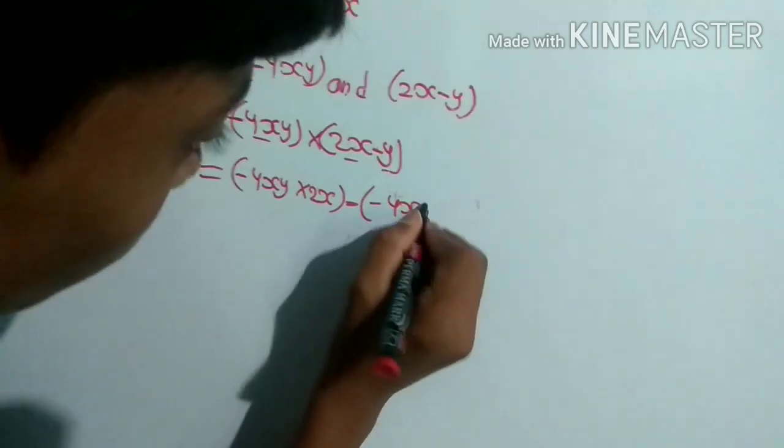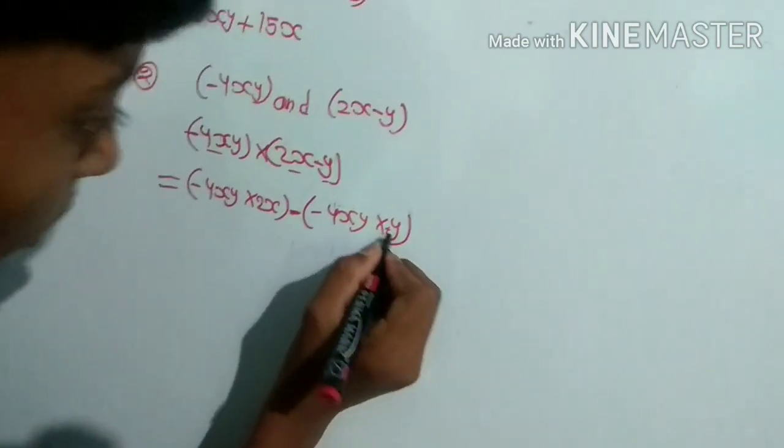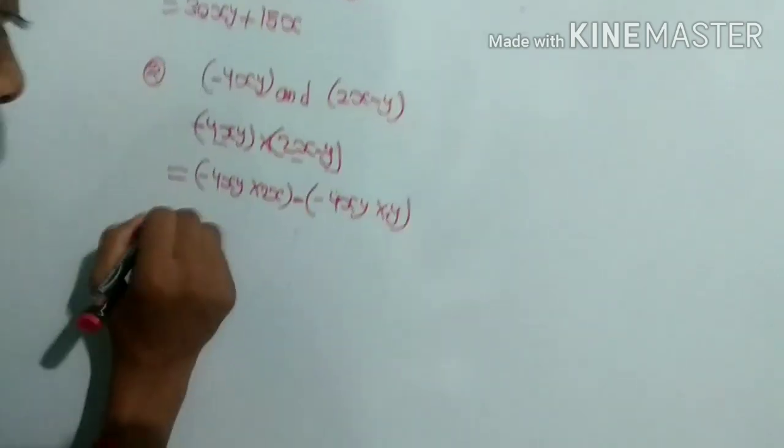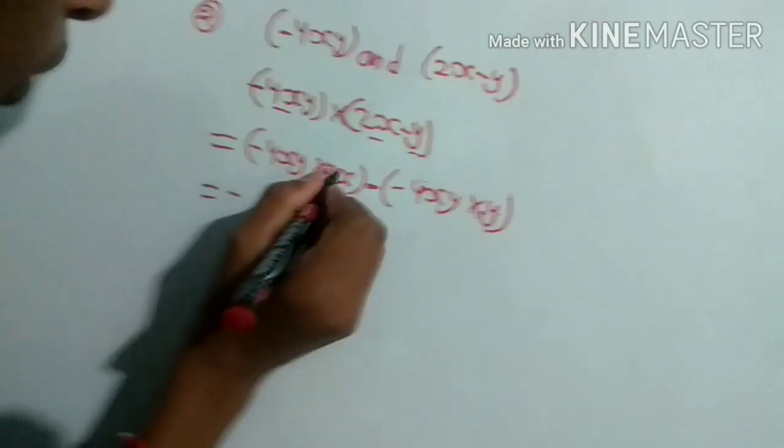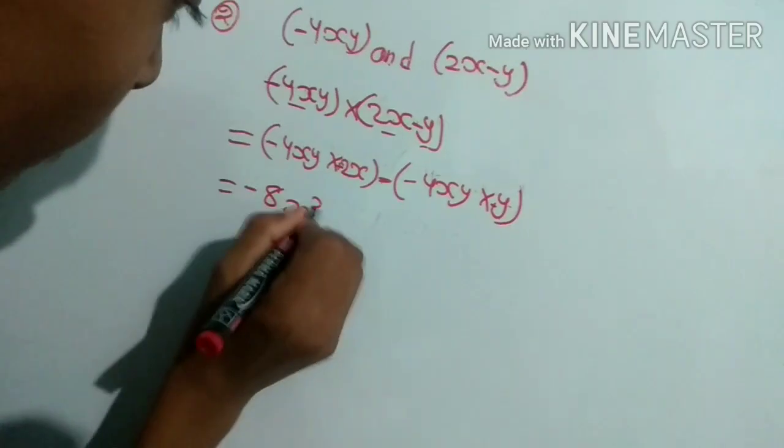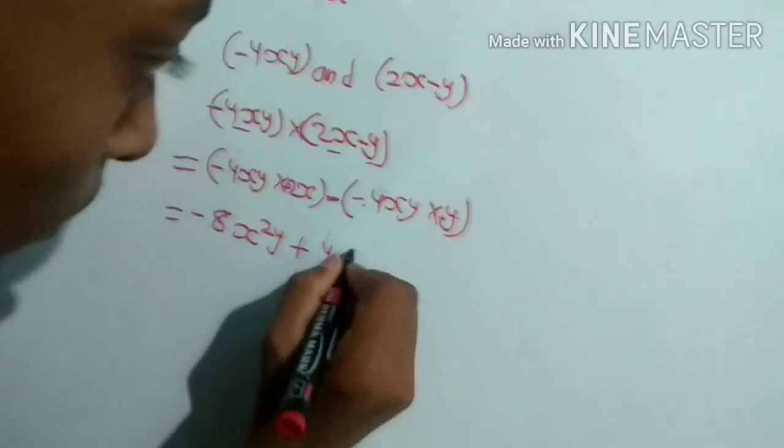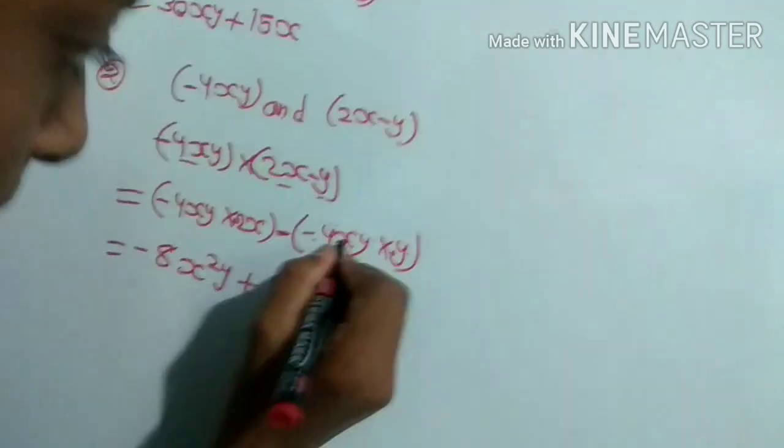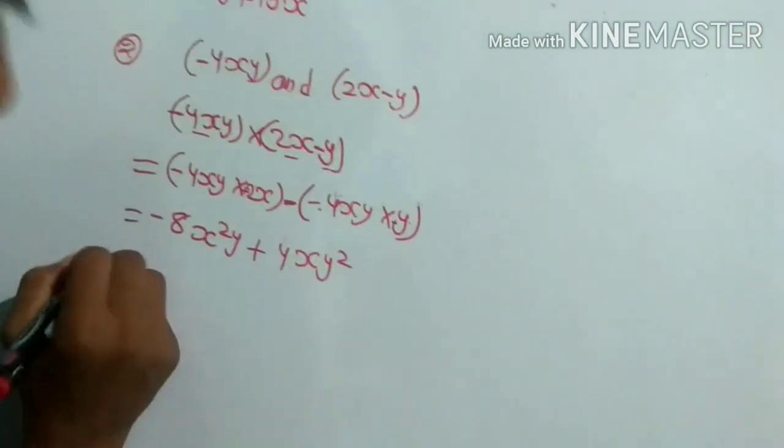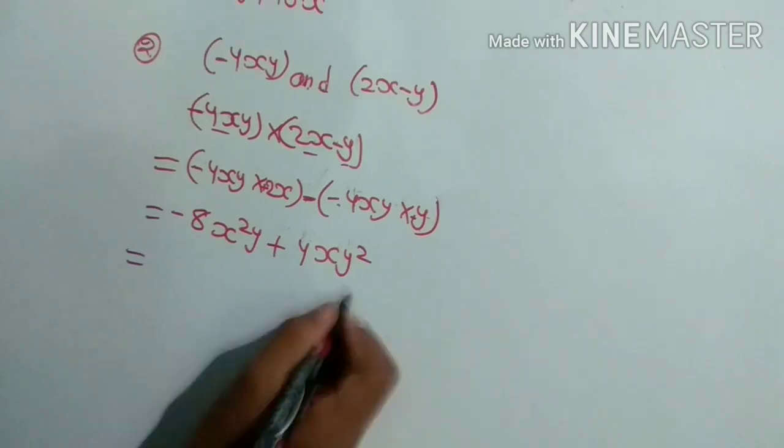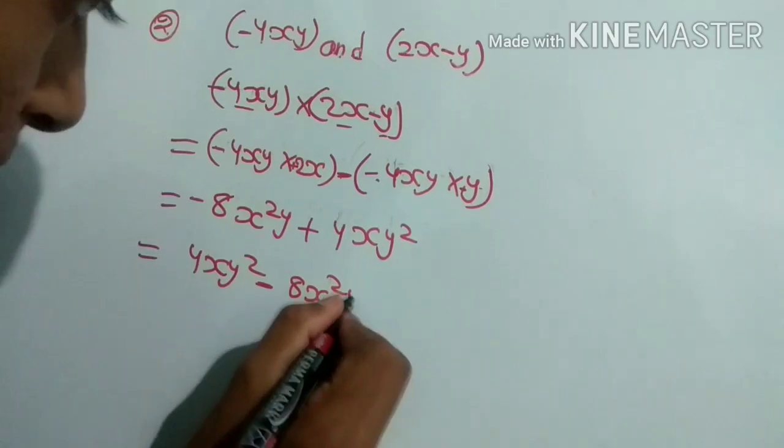Multiply into y. Minus times minus is plus, and plus times minus is minus. So we get minus 8x squared y. Minus into minus is plus, so 4xy squared. The final answer is 4xy squared minus 8x squared y.